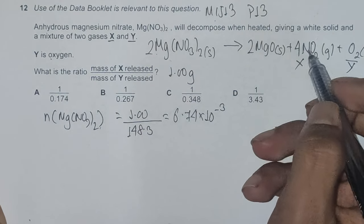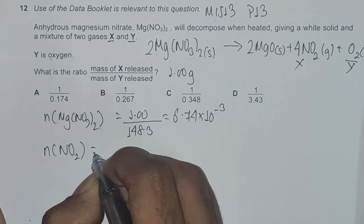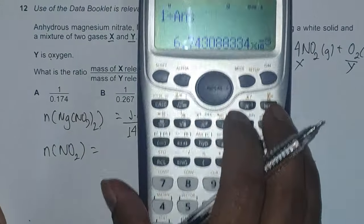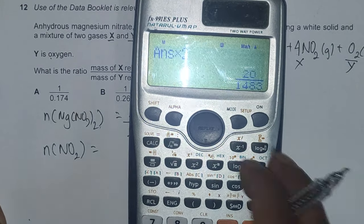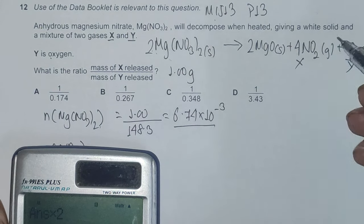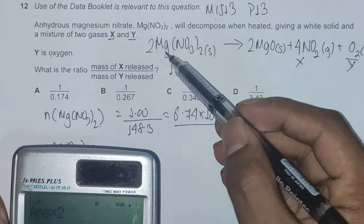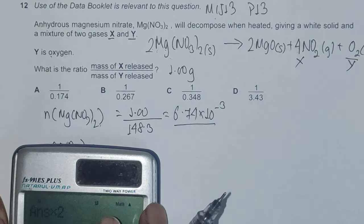That means moles of nitrogen dioxide is this multiplied by 2, because we have 2 moles of magnesium nitrate and 4 moles of nitrogen dioxide, and the mole ratio gives for every 2 moles of magnesium nitrate formed we have 4 moles of nitrogen dioxide.